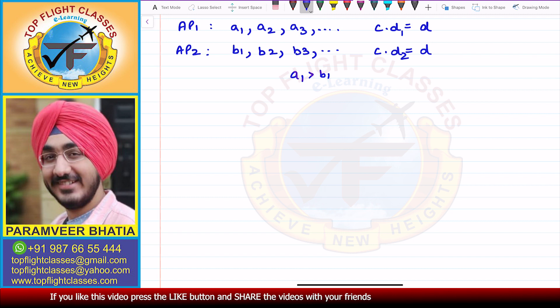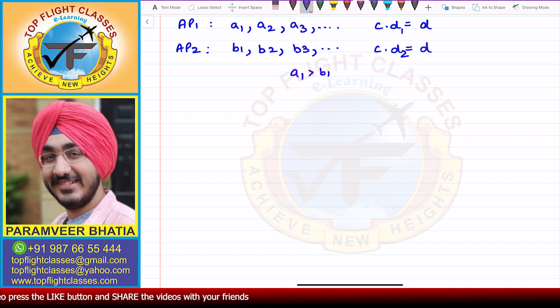Now let us suppose that A1 is greater than B1. We are taking this assumption in this case to solve this question. Now since A1 is greater than B1, that means A100 will be greater than B100, because the common difference is the same.